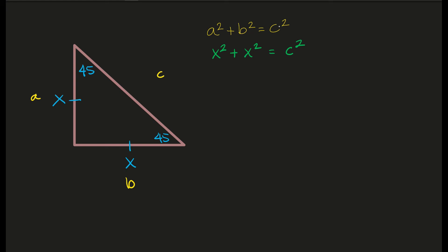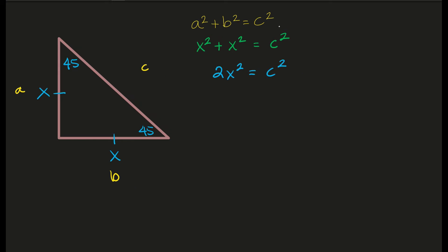What we're going to try to do now is solve and see if we can determine a value for c. I know that x squared plus x squared is 2x squared. Now we have 2x squared equals c squared. So here we do want the value of c. If I rewrite this to say c squared equals 2x squared.